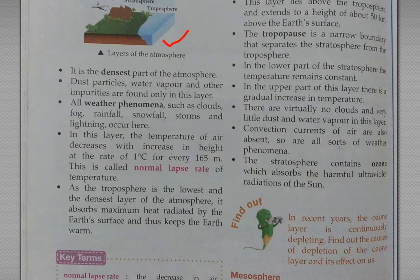In this layer, the temperature of the air decreases with increasing height at the rate of 1 degree Celsius for every 165 meters.